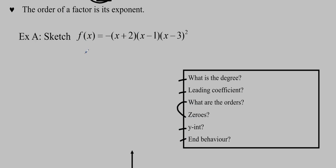When we want to sketch this, we're going to find the zeros. Just like with a quadratic, we set each factor to zero. So x equals negative 2, x equals 1, and x equals 3.